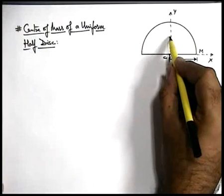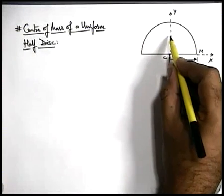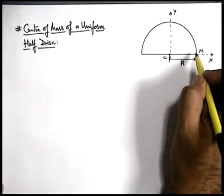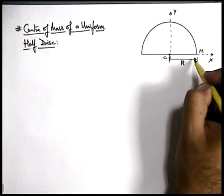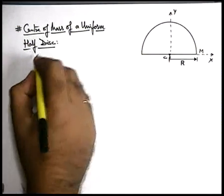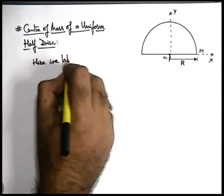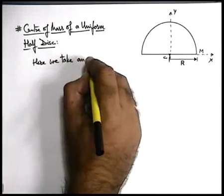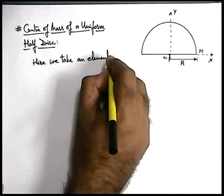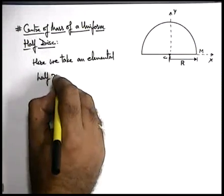To find the center of mass coordinate in y direction, we need to consider a small element because this disc is a continuous object. So here we take an elemental half ring.